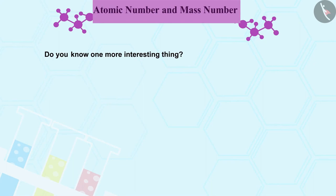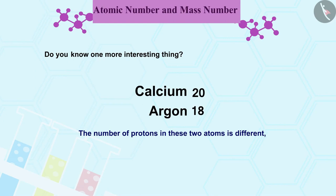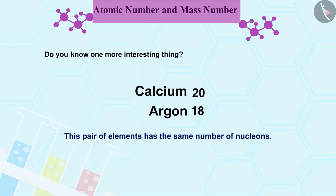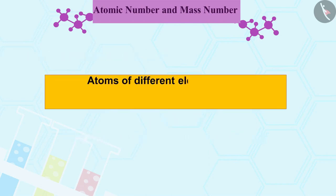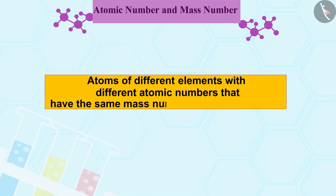Let us consider two elements: calcium, atomic number 20 and argon, atomic number 18. The number of protons in these two atoms is different, but the mass number of both elements is 40. In other words, this pair of elements has the same number of nucleons. Atoms of different elements with different atomic numbers that have the same mass number are called isobars.